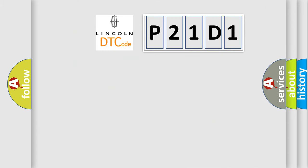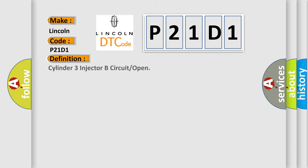So, what does the diagnostic trouble code P21D1 interpret specifically for Lincoln car manufacturers? The basic definition is: Cylinder 3 injector B circuit open.